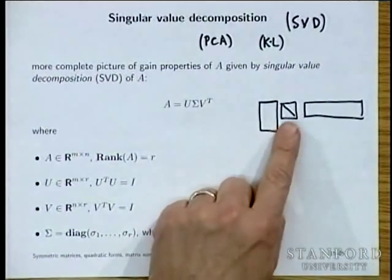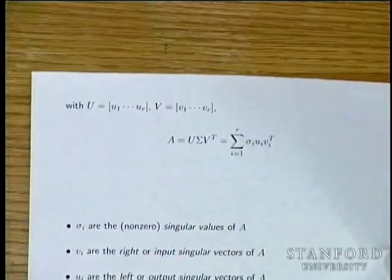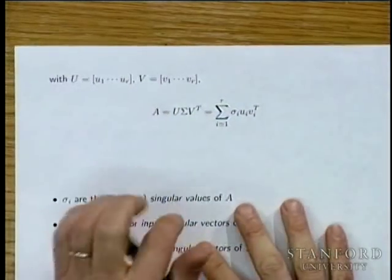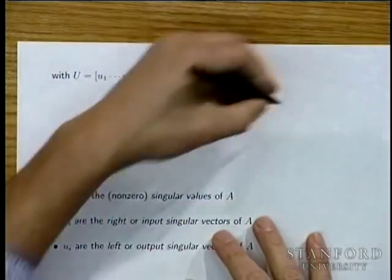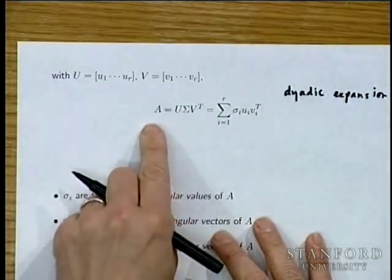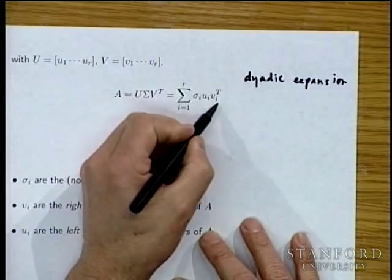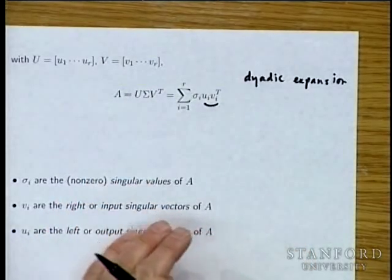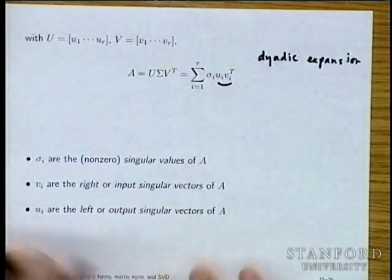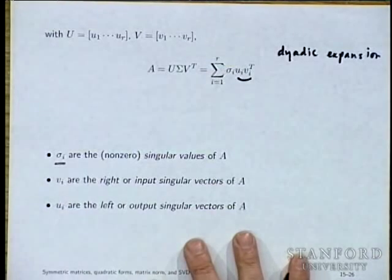This intermediate dimension is the rank of the matrix. You can write the SVD in many ways. If you write the columns of U as u₁ through u_R and the columns of V as v₁ through v_R, you can write U Σ V^T as a dyadic expansion — a linear combination of dyads u_i v_i^T. A dyad is just a rank-one matrix, also called an outer product.